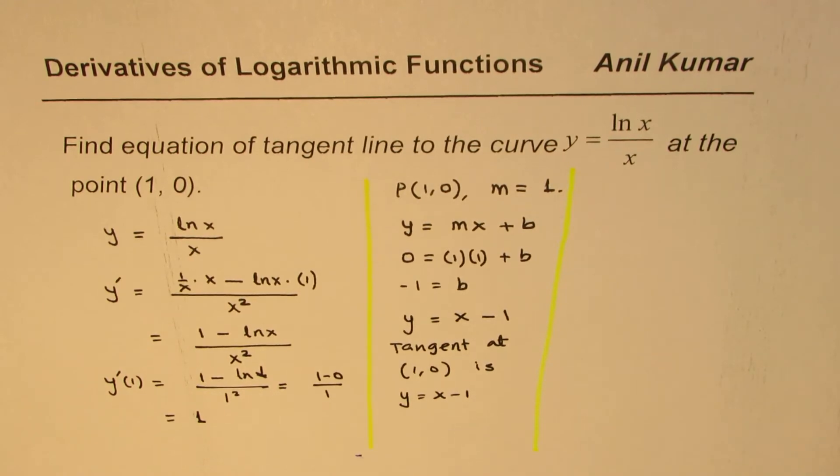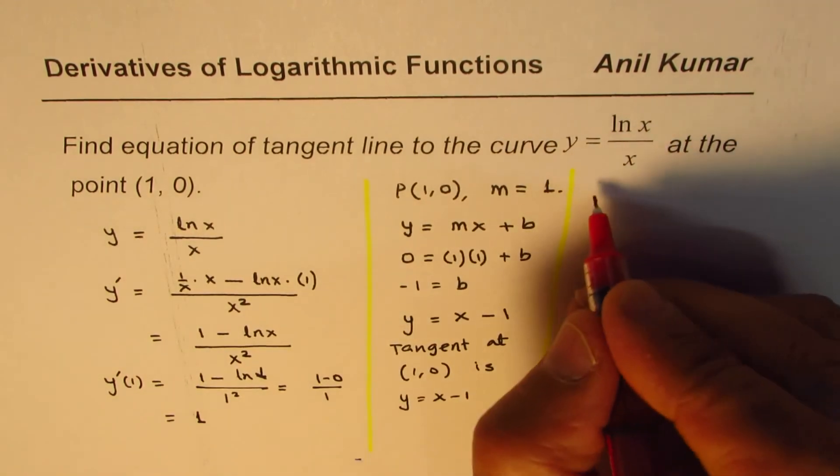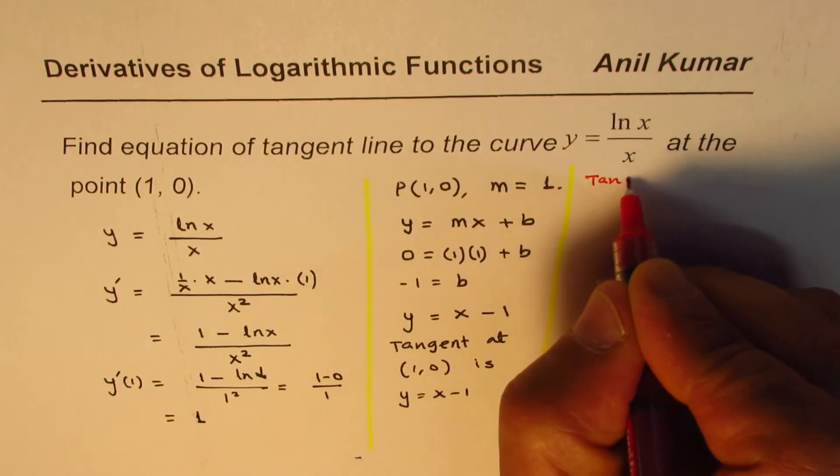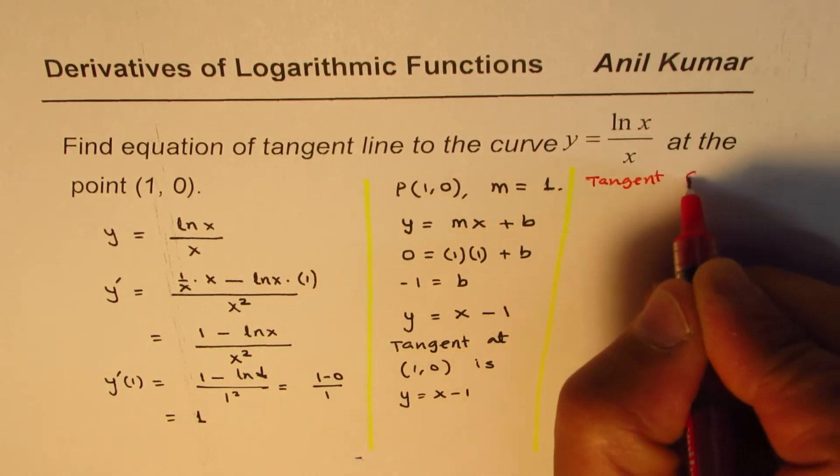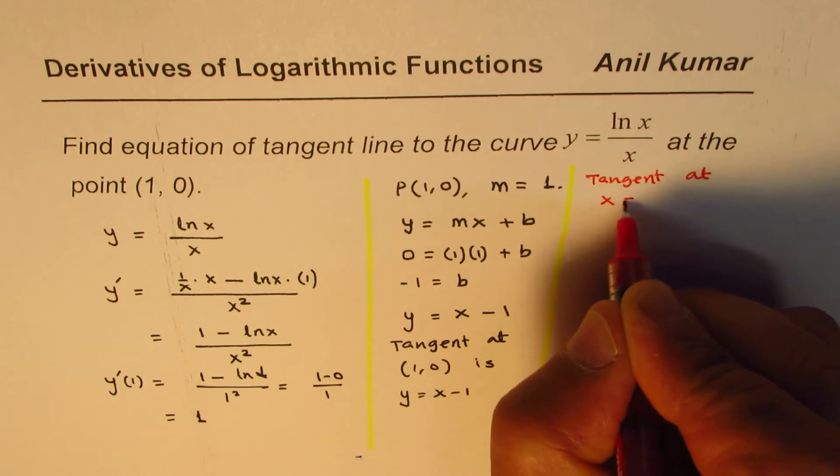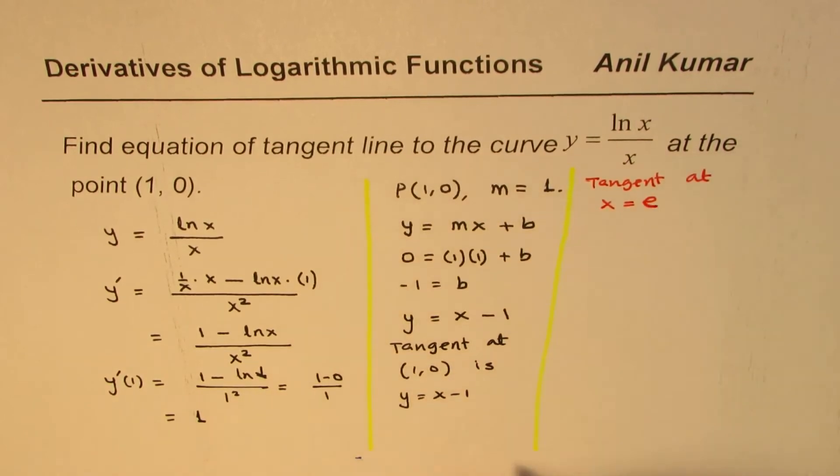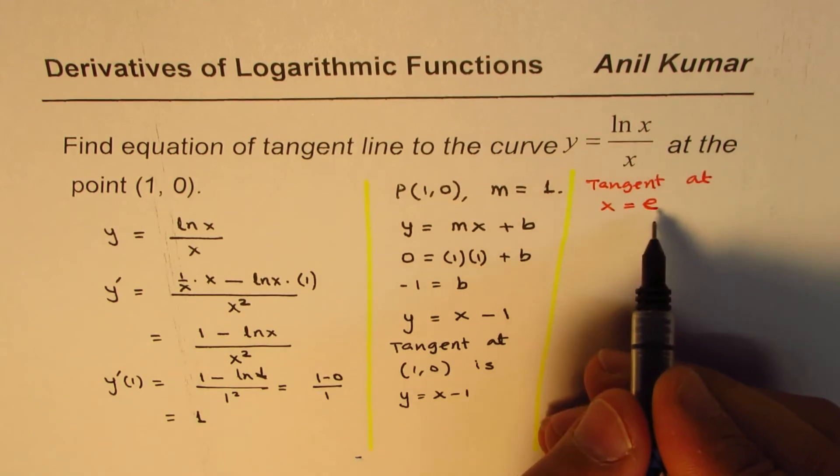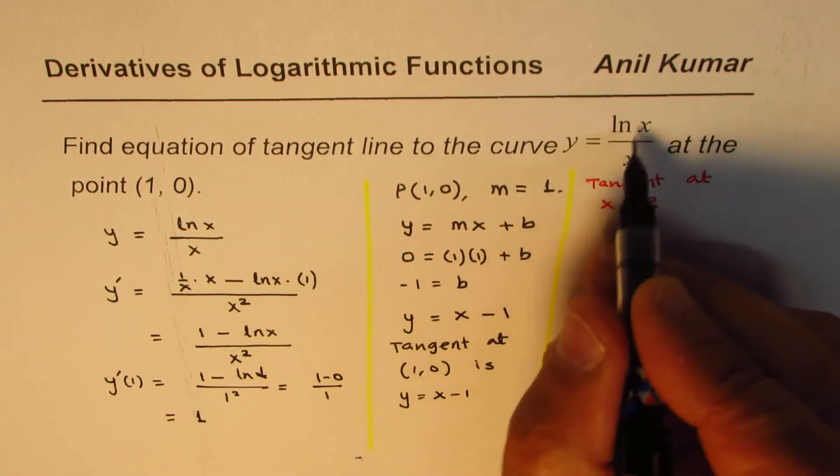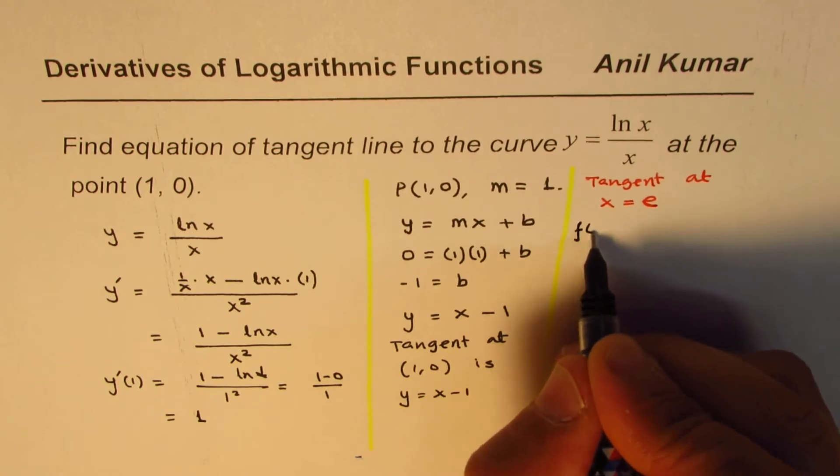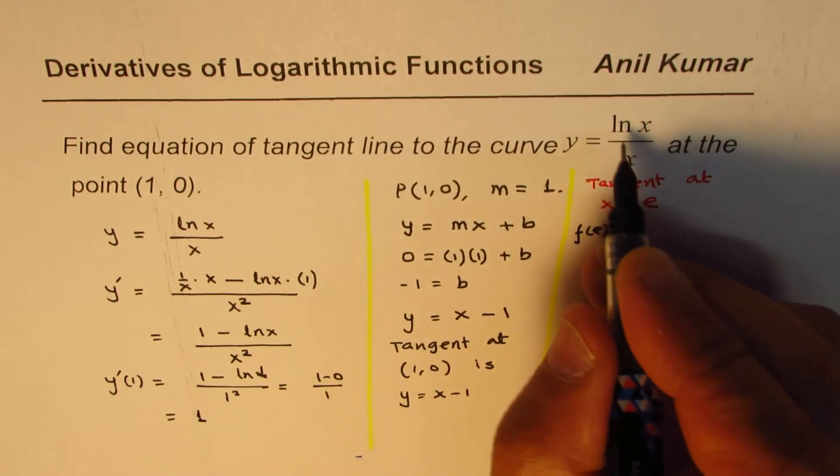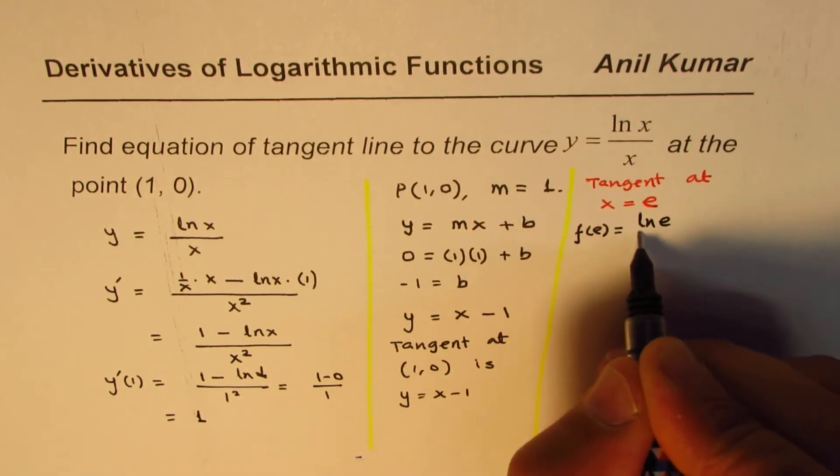Now let's extend this question. What is the equation of tangent at x equals to e, let us say, right? Now, if we need to find tangent at x equals to e, then what is the value of y at e? So what is the value of the function at e? Let's calculate this first. We have this as ln e over e.